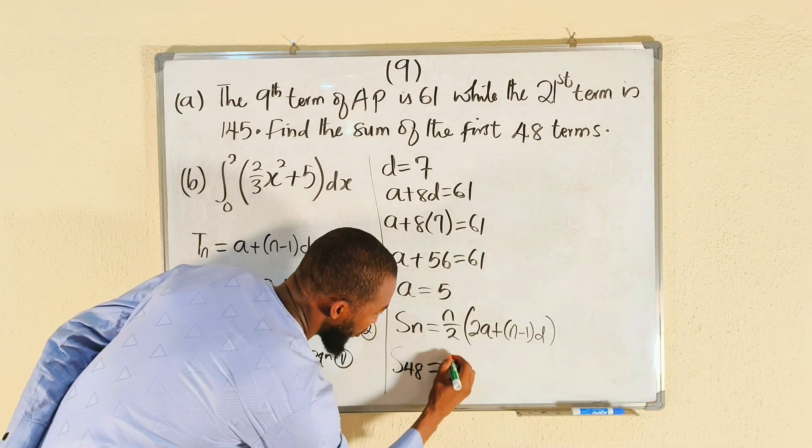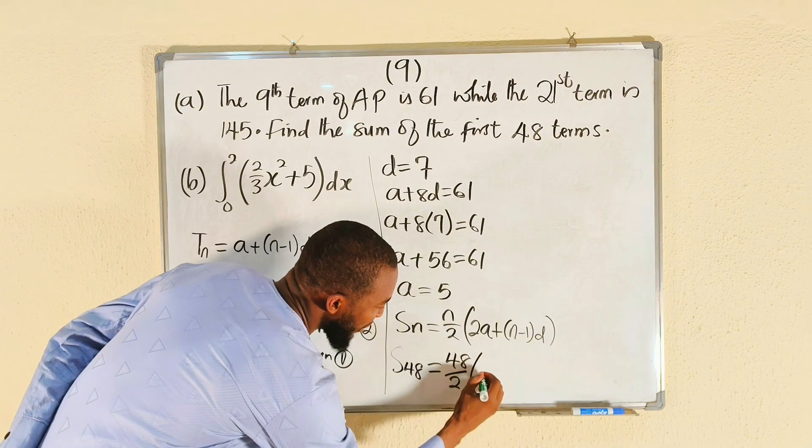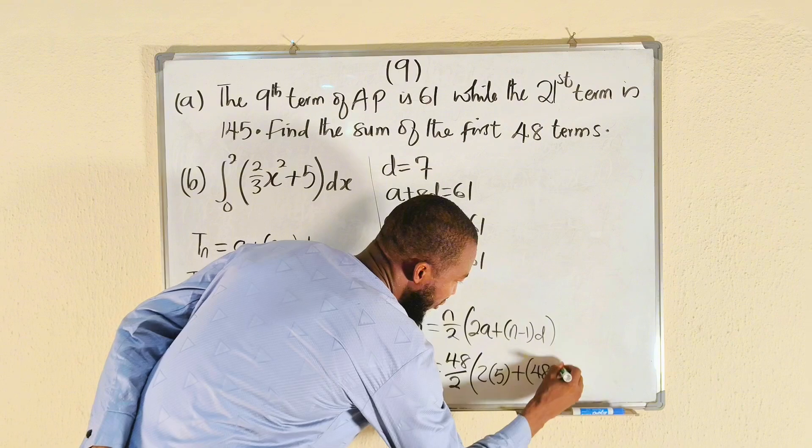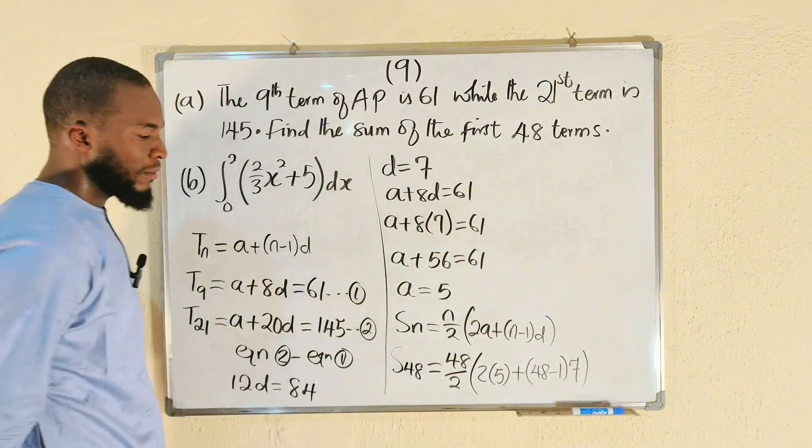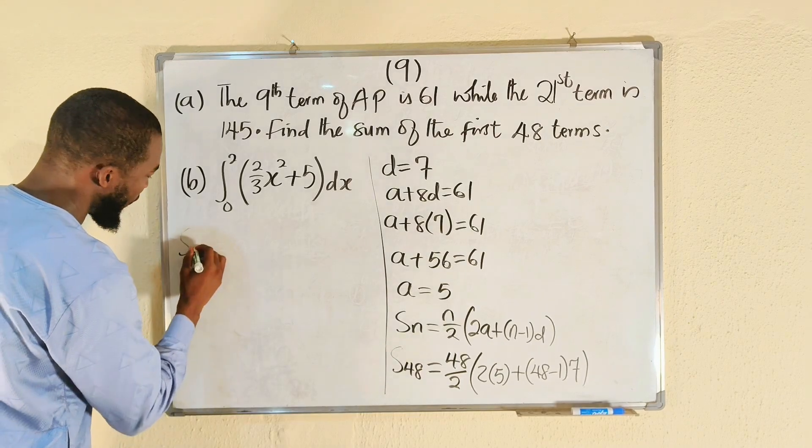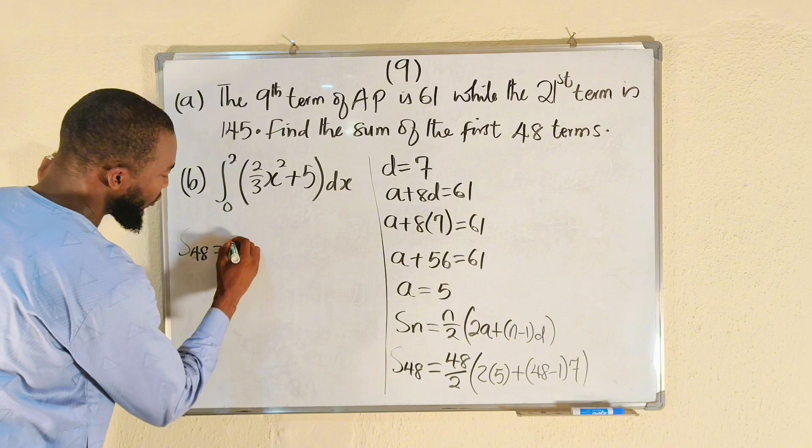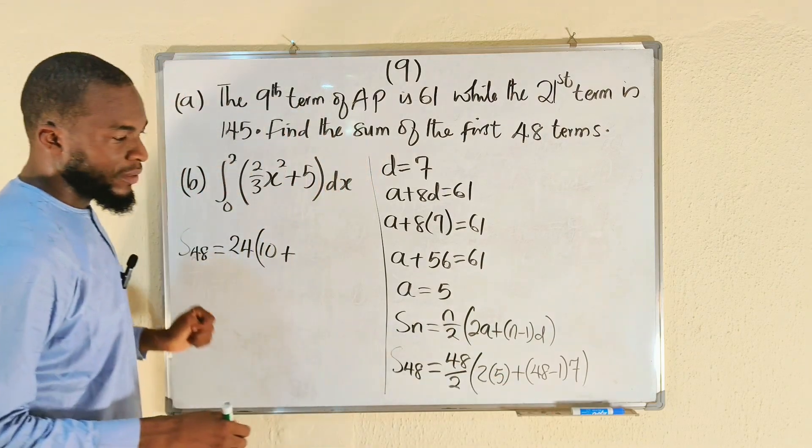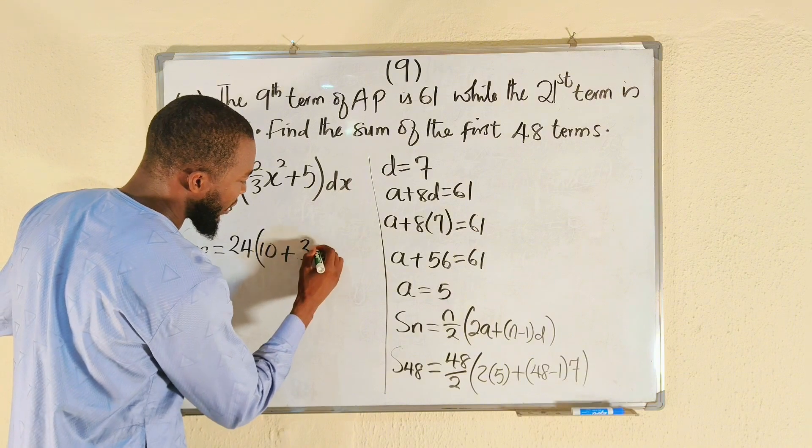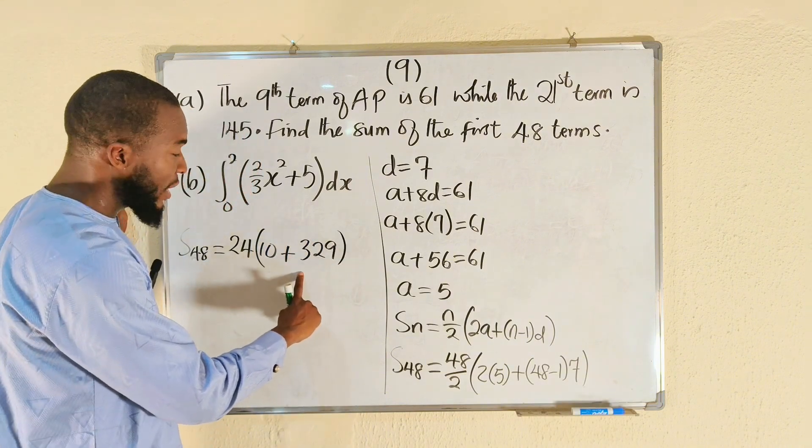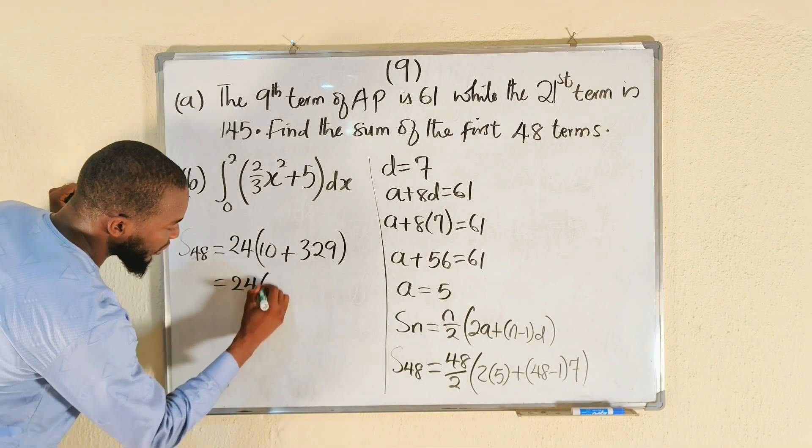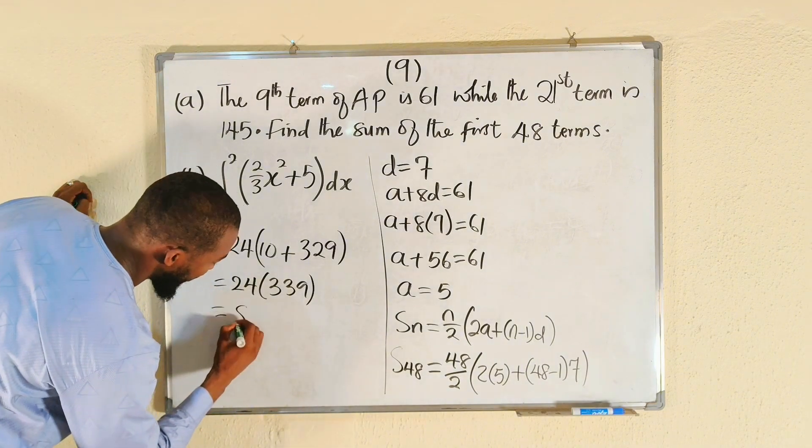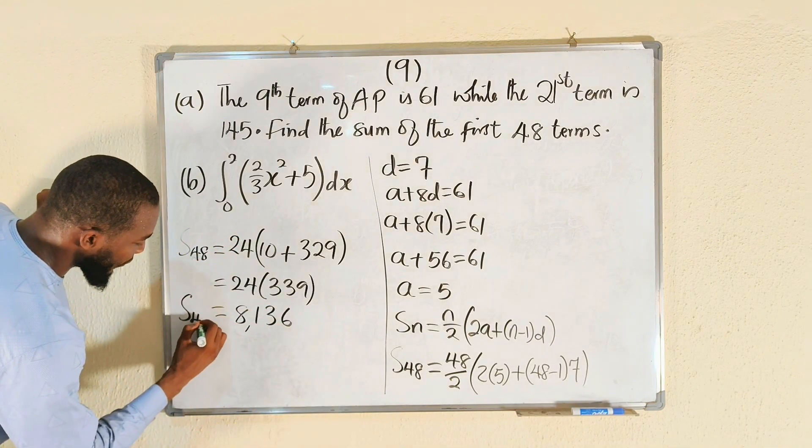So S48 equals 48 divided by 2 multiplied by (2 times a, which is 5, plus n which is 48 minus 1, multiplied by d which is 7). S48 equals 48 divided by 2, which is 24, multiplied by (2 times 5 is 10 plus 47 times 7 is 329). Together we have 339. This is 24 multiplied by 339, and once you multiply this you're going to get 8136. This is the sum of the first 48 terms.